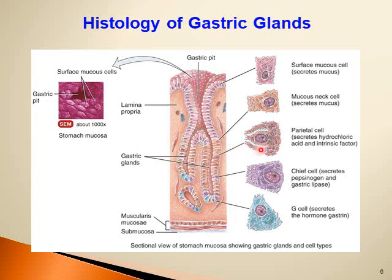Deep in the gland we find specialized parietal cells, which secrete hydrochloric acid and intrinsic factor — a factor very important for the absorption of vitamin B12. Going deeper, we encounter chief cells, which release digestive enzymes: pepsinogen for protein digestion and gastric lipase for the digestion of lipids or triglycerides.